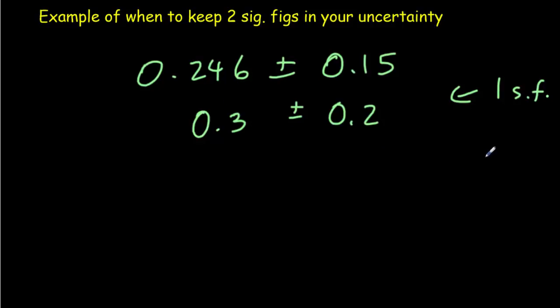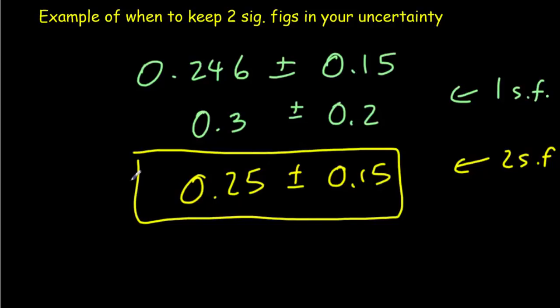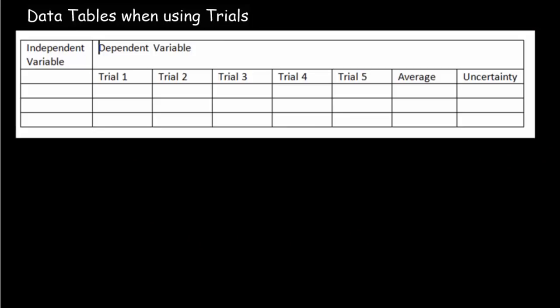So if you go to two significant digits in your uncertainty, that would be plus or minus 0.15. And you'd keep an extra digit here, 0.25. And I think this would be a better representation because effectively you haven't messed up the centering of your average value.